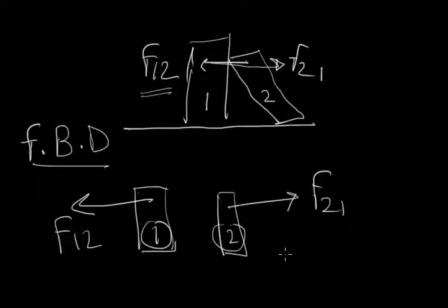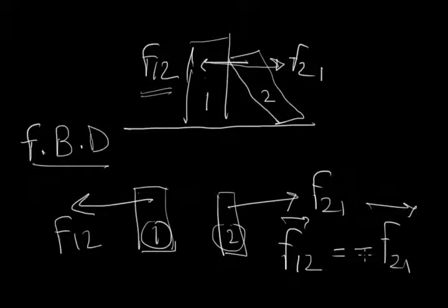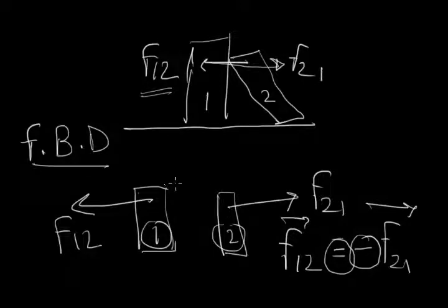Now according to the third law, these two forces F12 and F21, well we can consider them as vectors as we are considering the direction part. So these two forces are equal and opposite, and opposite is meant by the minus sign. So when we say that every action has an equal and opposite reaction, it is true, but we have to very importantly remember that this action and reaction act on two different bodies.